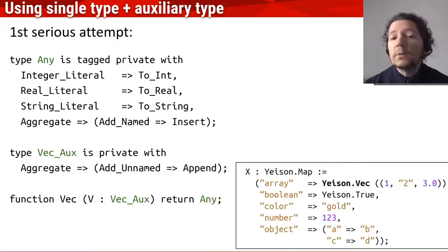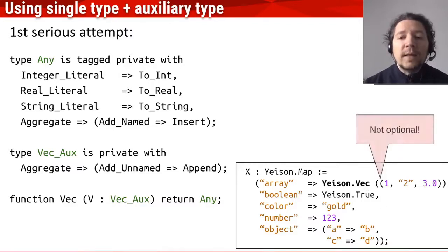And with this, we are really near our objective, because we can have this kind of code, which we can have heterogeneous vectors, and the only sacrifice is that we have to make explicit that this is a vector.